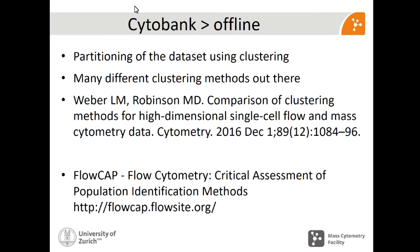We start learning what makes our dataset and what kinds of cell types are present. At that point, after we looked at it, we want to partition it so that we start extracting summary statistics and numbers that we can work with and compare. This is, in my opinion, the single most important part of data analysis, and there are many different clustering methods out there. I'll be showing an example from a very recent publication, but there's also a lot of older work — the initiative was called FlowCAP, Flow Cytometry Critical Assessment for Population Identification Methods — providing a platform for comparison of different algorithms, benchmarking them in different real-life examples.